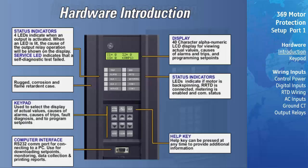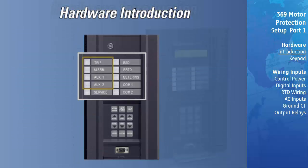The 10 LED indicators located on the front of the 369 operate as follows. The trip, alarm, AUX1 and AUX2 LEDs illuminate when the associated output has energized. The service LED illuminates if the 369 requires service. The backspin detection LED illuminates when the 369 detects a backspin condition on a stopped motor. The metering LED will illuminate if either the metering or backspin detection option is installed. The remote RTD communication LED is on when at least one remote RTD module is communicating to the 369. And the COM1 and COM2 LEDs illuminate when there is communication activity on the associated port.